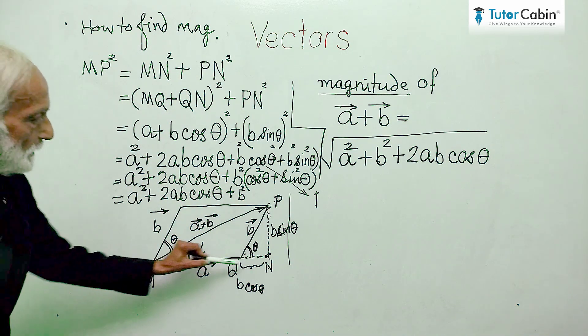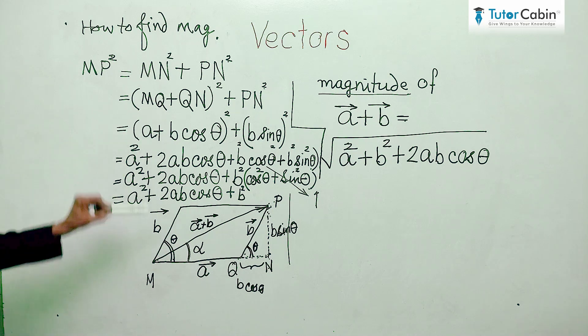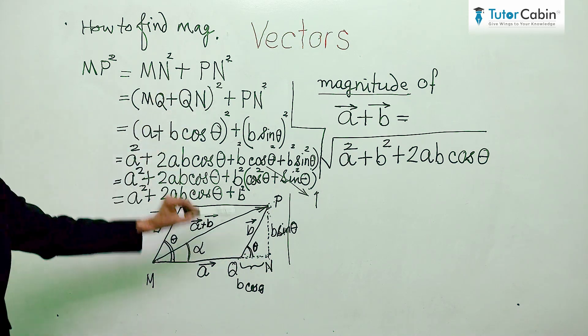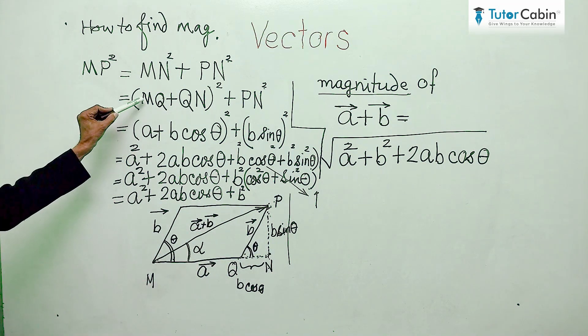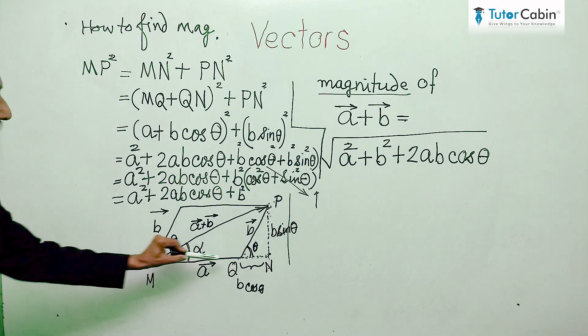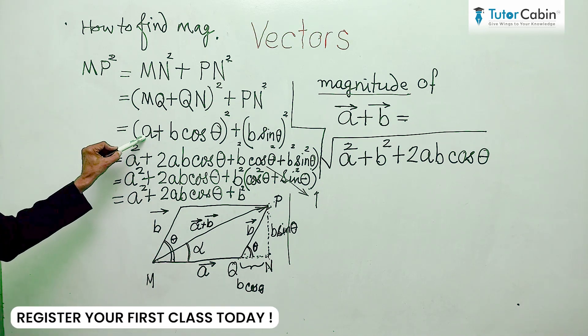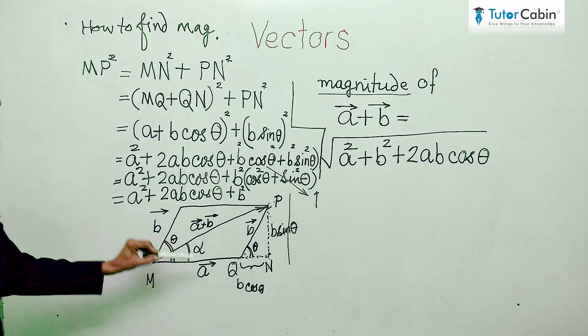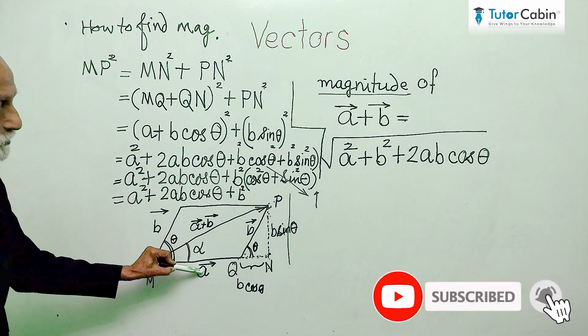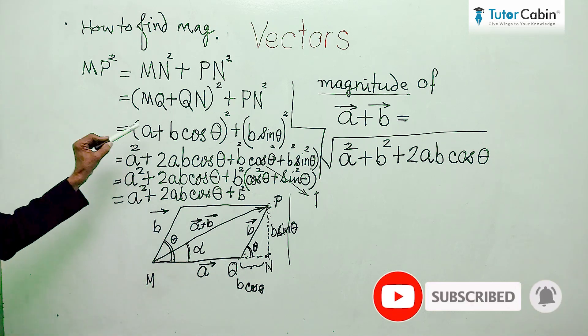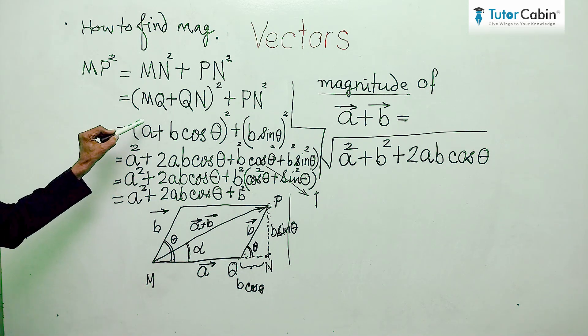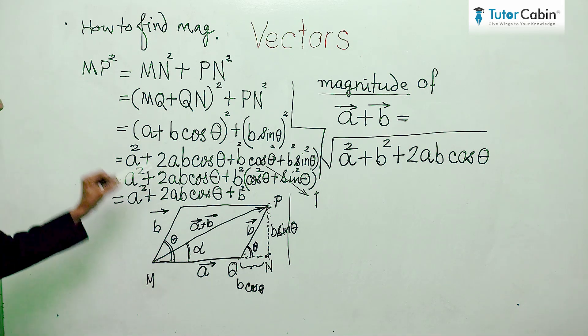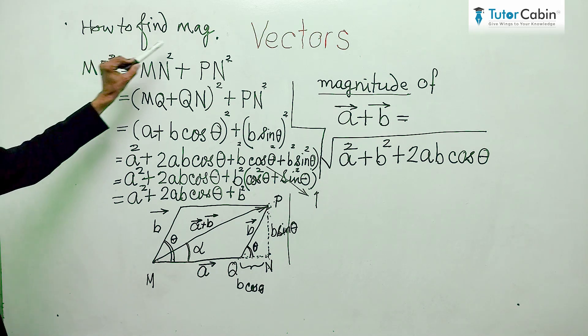Now, MN square we can write as MQ plus QN whole square and PN square as it is. Now, MQ is A, so we write A here. You will ask that here we had written A bar, A arrow - we had shown A as vector and here we are writing simply without any arrow. Why so? This is because we are simply finding out the magnitude.